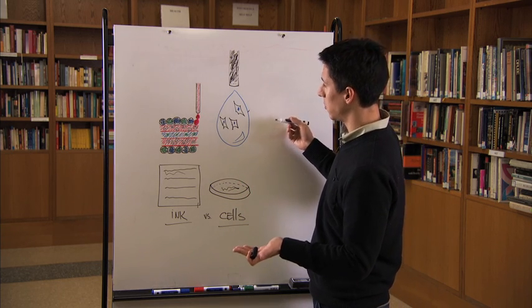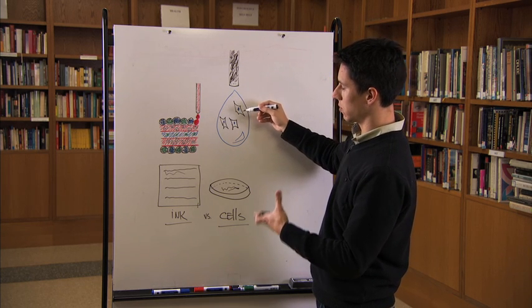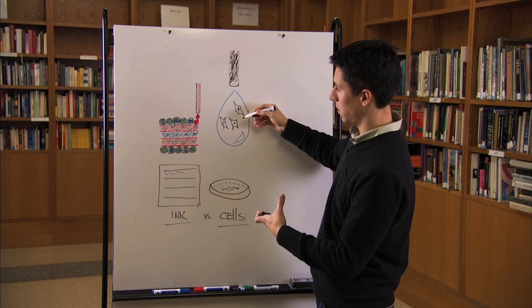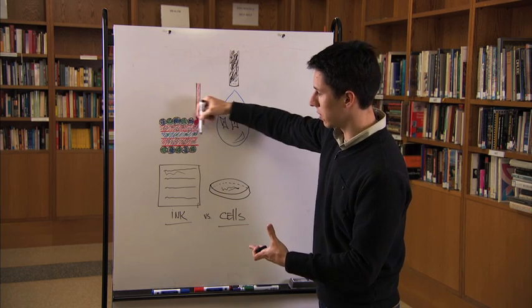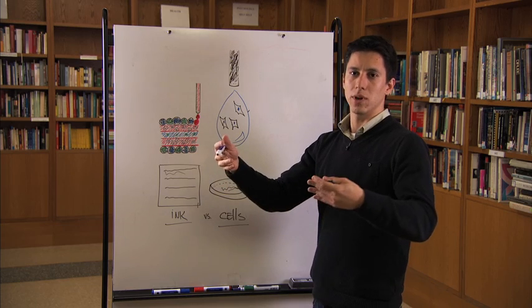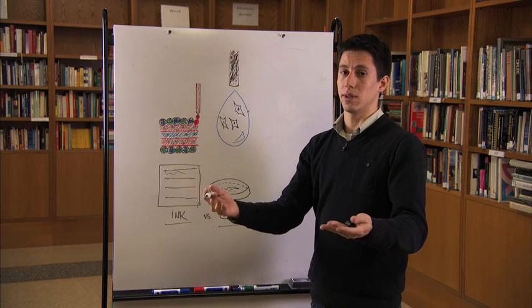The way it works is we can assemble extracellular matrix molecule components together and put the cells in a specific arrangement that replicates the actual organ with all the complexity. We can control the way that cells interact and by doing so, we can recreate an actual organ.